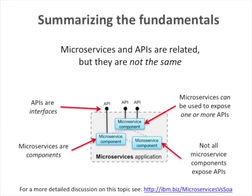We could easily have a microservice exposing multiple APIs, or just one, or indeed none at all. A microservice component could be working on asynchronous messages — picking messages up, manipulating them, enriching them, and putting them somewhere else. There may be no API whatsoever; it's just a component of an application.